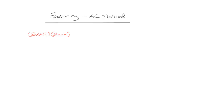Anytime you're trying to factor anything in mathematics you need to have a really good understanding of the multiplication. So first here I'm going to multiply these two linear polynomials together. We use the FOIL method, where the idea is we multiply both terms in the first polynomial by both terms in the second polynomial.